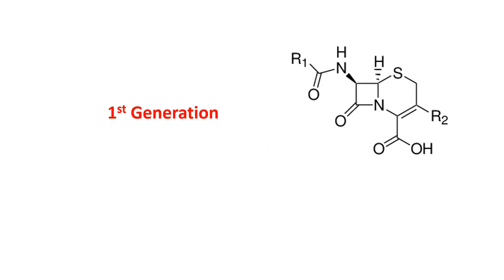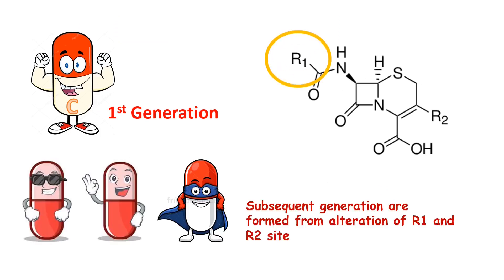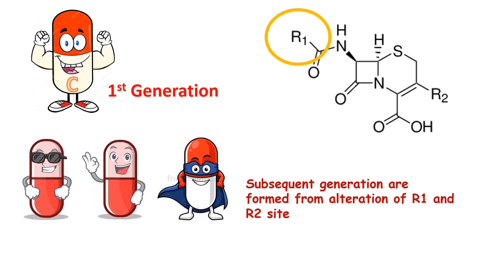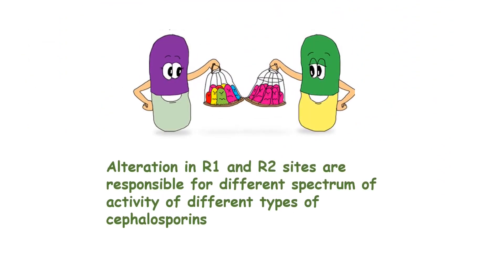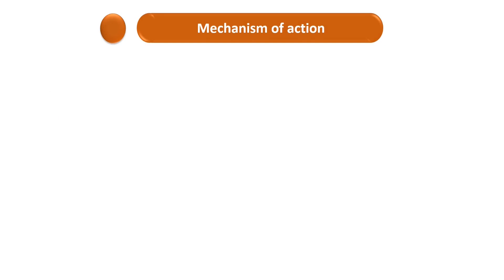The first generation of cephalosporins were created by modifying the R1 site of the cephalosporin structure, and the subsequent generations have been synthetically produced with modifications at both the R1 and R2 sites. The change in the R1 site is also responsible for the different spectrum of activity among different generations of cephalosporins.